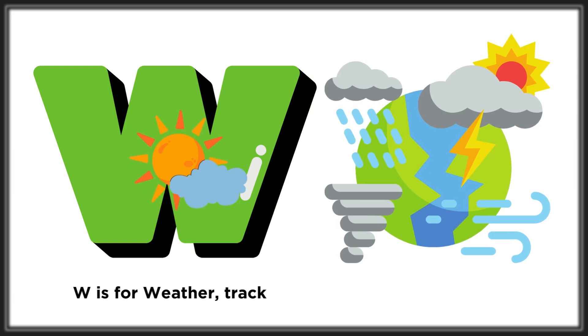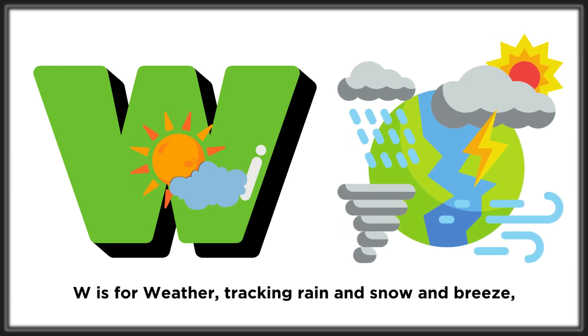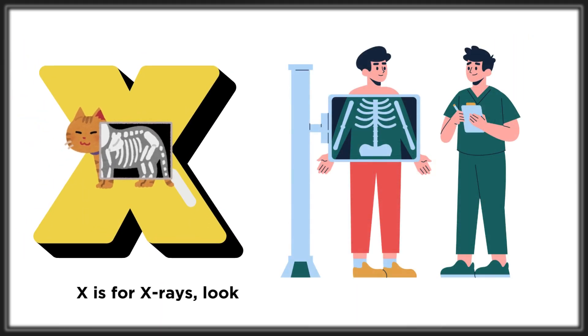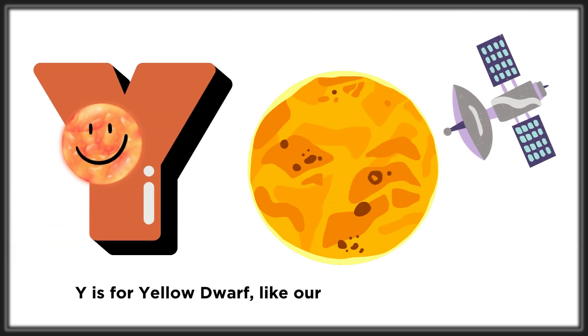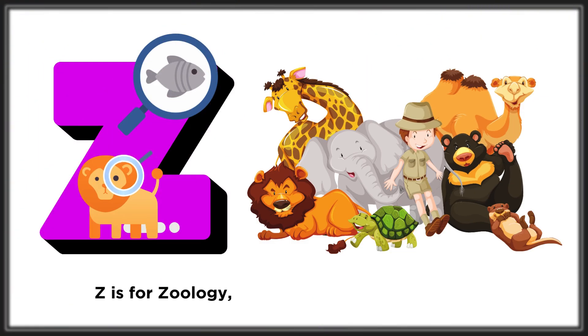W is for weather, tracking rain and snow and breeze. X is for x-rays, looking through our bones with ease. Y is for yellow dwarf, like a star, the sun we know. Z is for zoology,